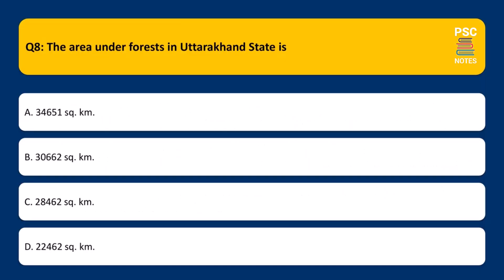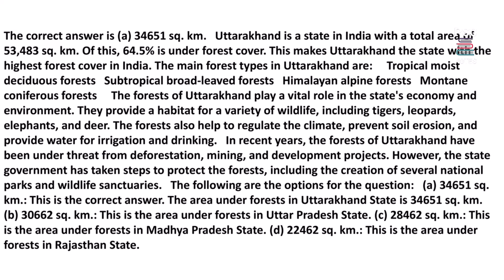The area under forests in Uttarakhand state is: A. 34,651 sq. km. B. 30,662 sq. km. C. 28,462 sq. km. D. 22,462 sq. km. The correct answer is A. 34,651 sq. km. Uttarakhand has a total area of 53,483 sq. km, of which 64.5% is under forest cover, making it the state with the highest forest cover in India.